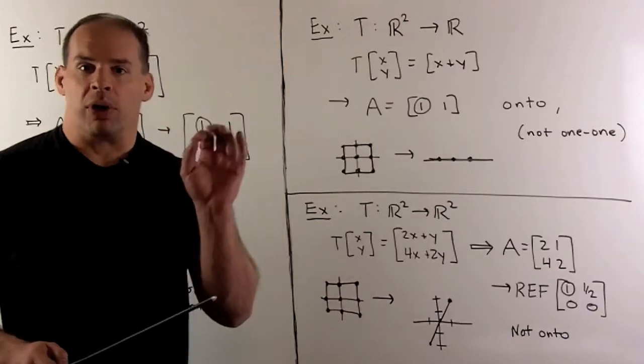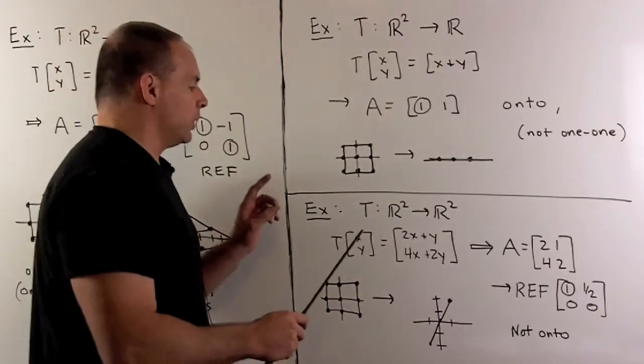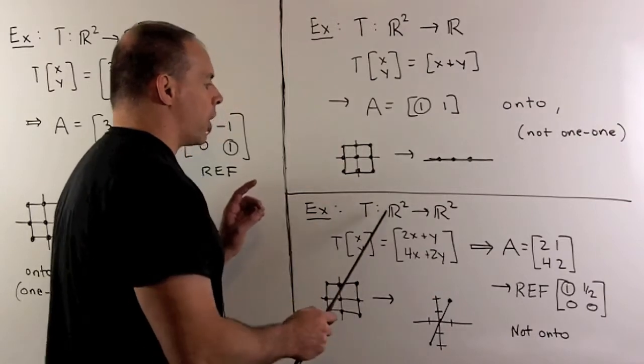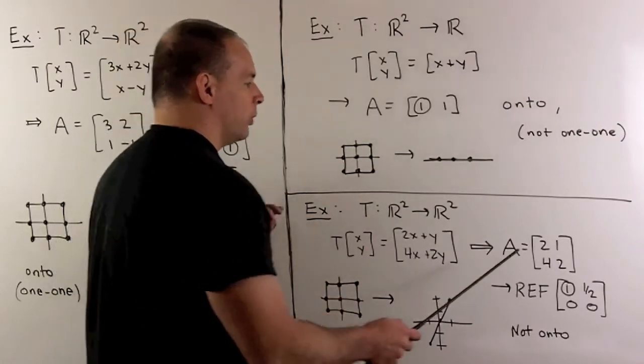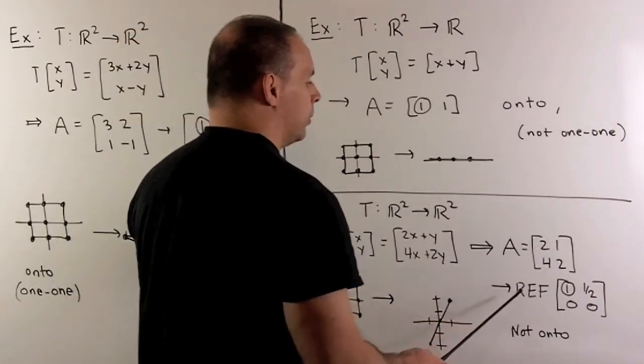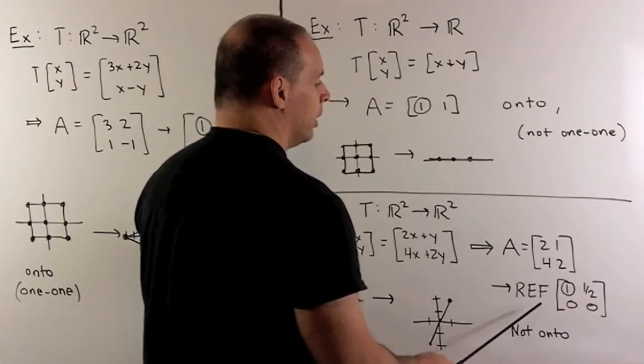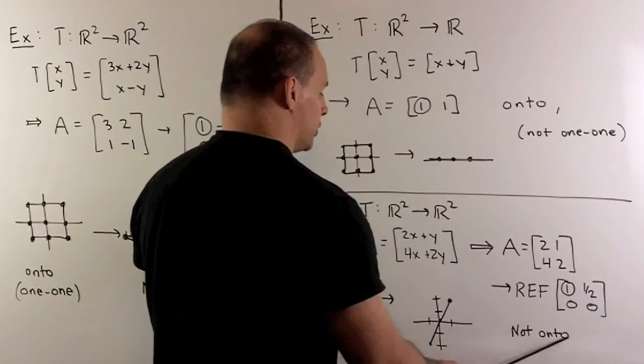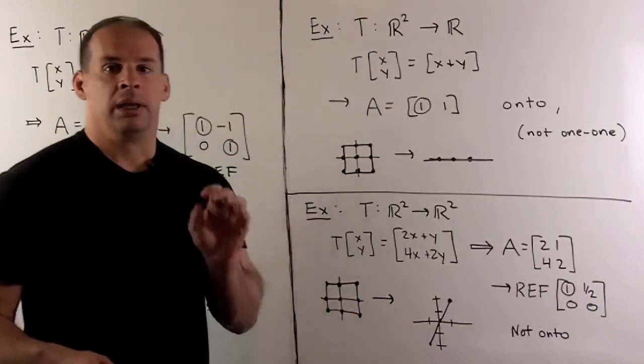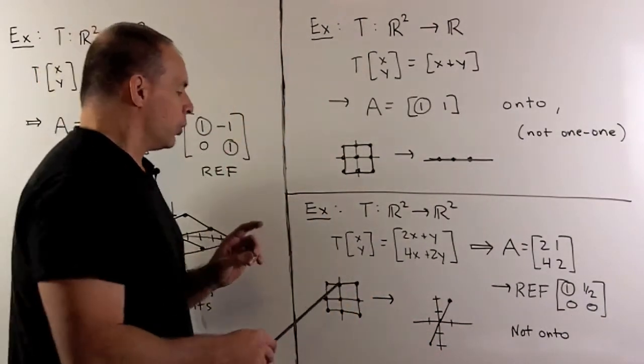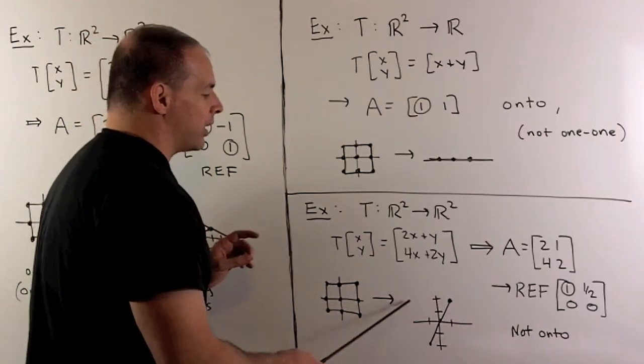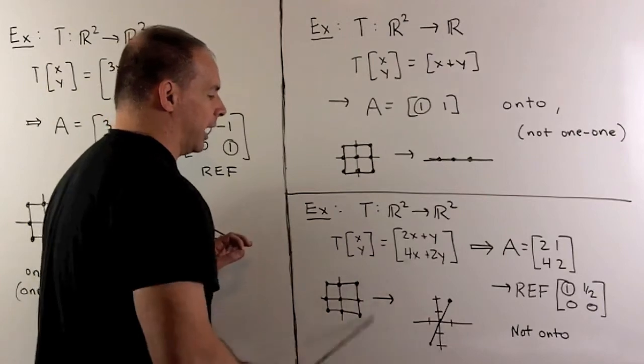Finally, an example where we're not onto. So we used this transformation before. Going from R2 to R2. We have the following A matrix. And when we go to row echelon form, we'll have only a pivot in the first row. So not onto. If we draw the picture, we're going to carry our grid to this line here. So we're not going to hit every point in the plane.